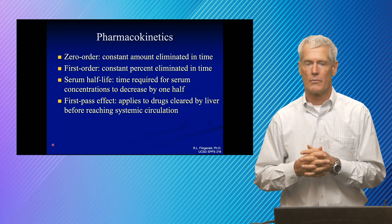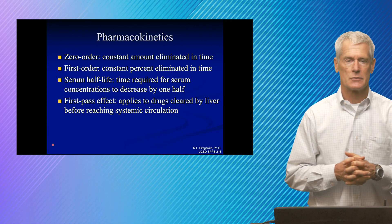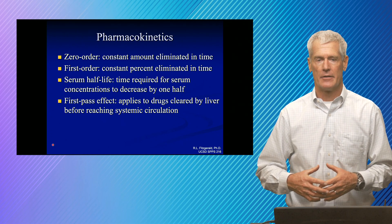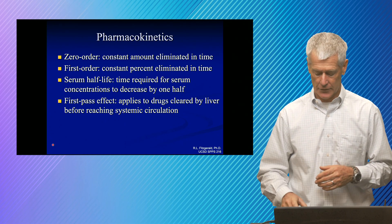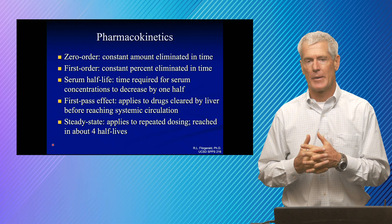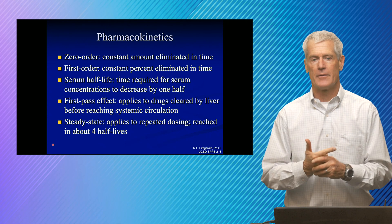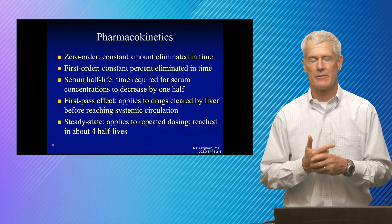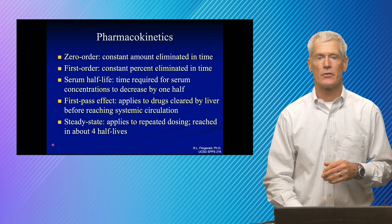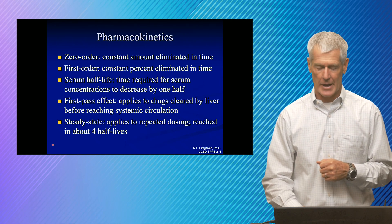First-pass effect depends on what drugs you're talking about. The drug can be cleared orally — it goes from your stomach to your liver, and your liver metabolizes it before it gets into central circulation. Thinking about steady state and therapeutic drug monitoring: steady state is independent of the dose and the dose interval — it only depends on the half-life of the drug. In about four half-lives, you reach steady state. So if you're making dose adjustments and want to monitor whether you've reached the therapeutic range, you need to wait about four half-lives.